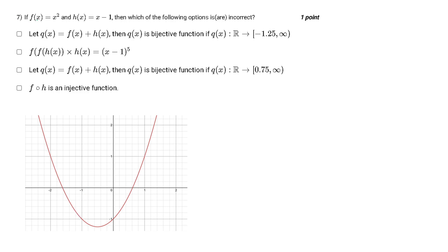The question says if f(x) is this and h(x) is this, then which of the following options are incorrect. Option A is talking about another function that is the summation of these both, and we have to decide whether this function is bijective or not.